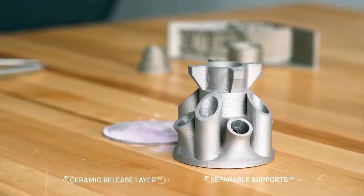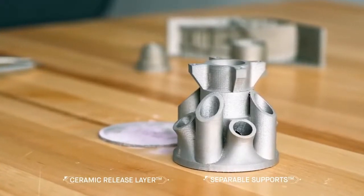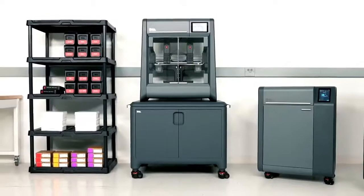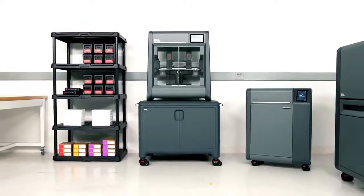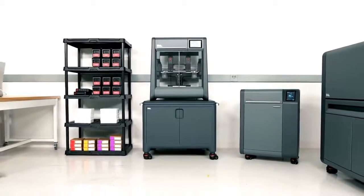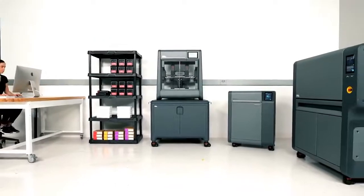The result is a near-net-shaped part with the strength, accuracy, and resolution needed for functional prototyping. The Studio System brings metal 3D printing to the engineer, providing the only safe, cost-effective, and easy-to-use solution for printing complex metal parts in-house.